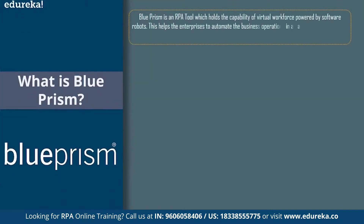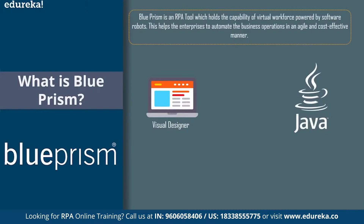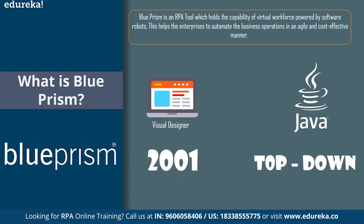Blue Prism is an RPA tool which holds the capability of a virtual workforce powered by software robots. This helps enterprises to automate business operations in an agile and cost-effective manner. This tool is mainly based on the Java programming language and offers a visual designer with drag-and-drop functionalities. When you open the Blue Prism tool, you'll clearly see a dashboard where you have drag-and-drop functionalities. You don't need to learn Java for this tool, but since it is built on Java, any knowledge of Java would be beneficial. This tool was formed in 2001 and offers a top-down approach, using inheritance, encapsulation, and various flowcharts visible on the dashboard.